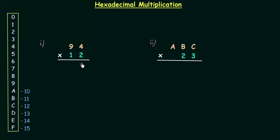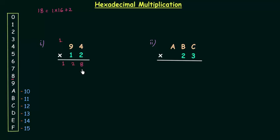2 multiplied by 4 is 8, and 8 is a hexadecimal number. 2 multiplied by 9 is 18, and 18 is not a hexadecimal number because in the hexadecimal number system we have 0 to 15 digits. So I will break 18 like this: 1 multiplied by 16 plus 2. So 1 is the carry, 2 will come here, and finally we have 128 as the result.